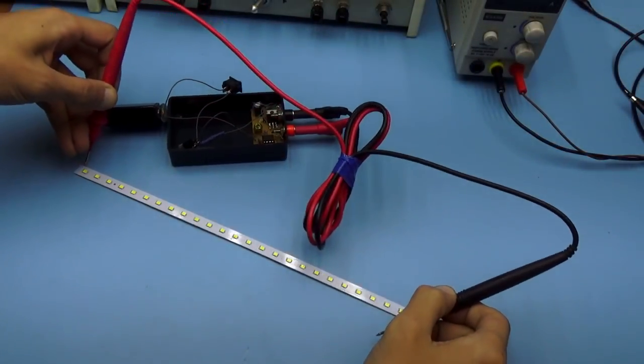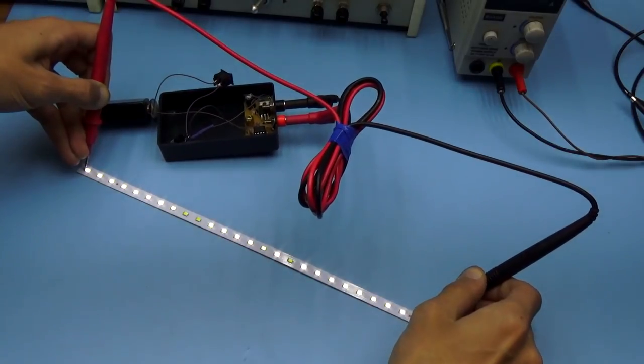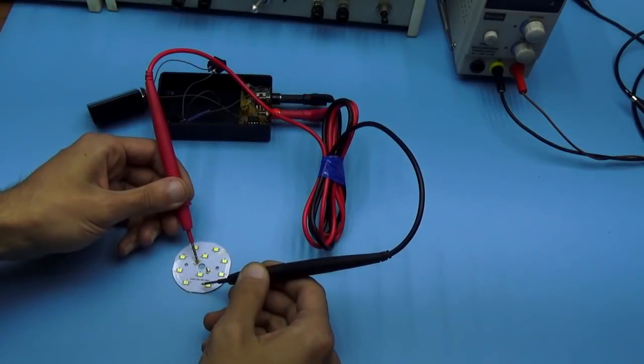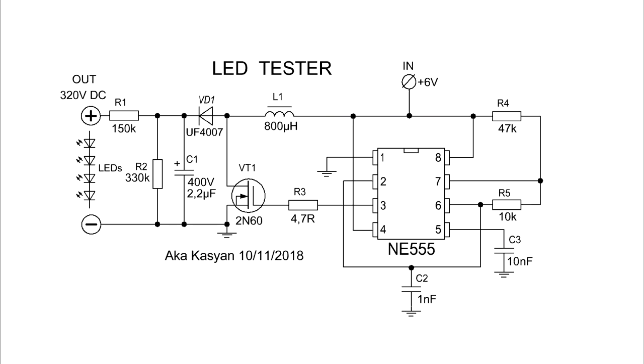When connecting an LED or a line of LEDs, the output voltage of the converter decreases to the required value, which is equal to the sum of the voltage drop across all LEDs. In other words, the LEDs themselves are the load and the stabilizing link.